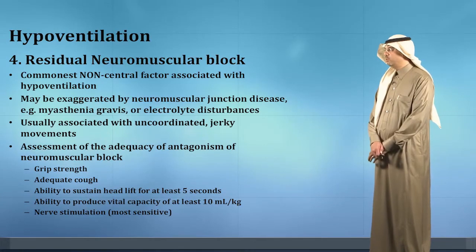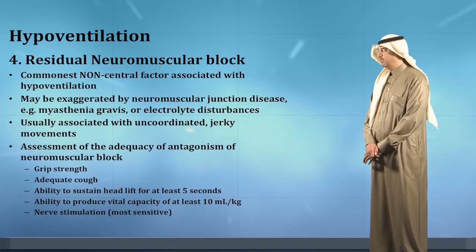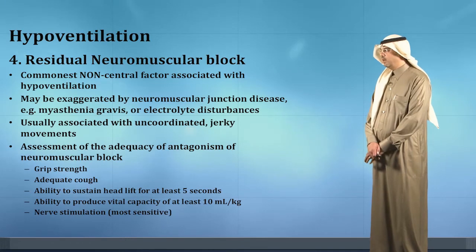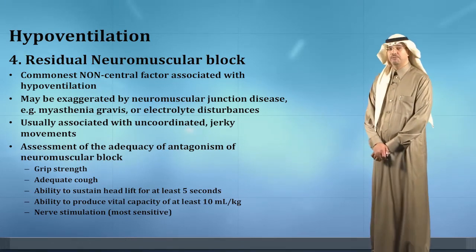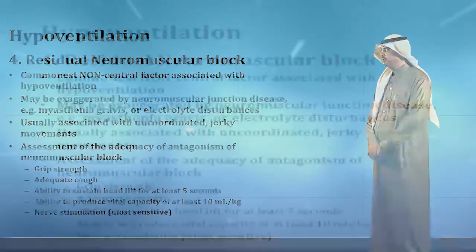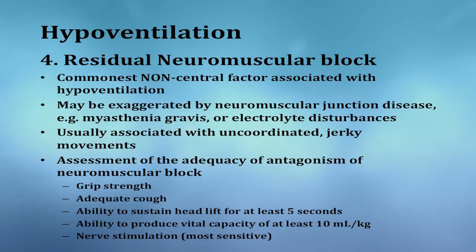Residual neuromuscular blockade is also a common cause for hypoventilation and is actually the commonest non-central factor associated with hypoventilation. It may be exaggerated by neuromuscular junction disease such as myasthenia gravis or electrolyte disturbances, and is usually associated with uncoordinated or jerky movement.